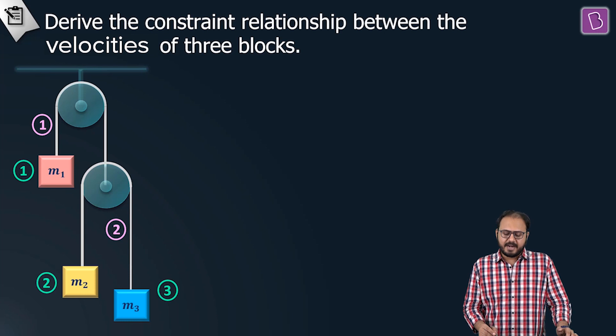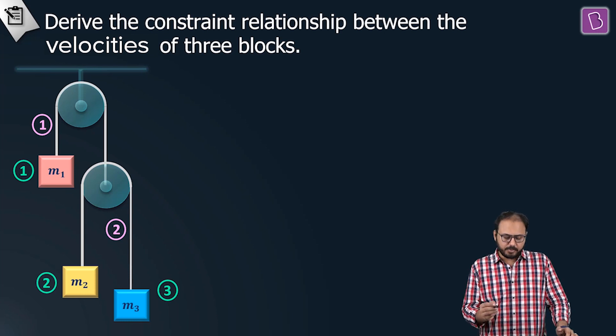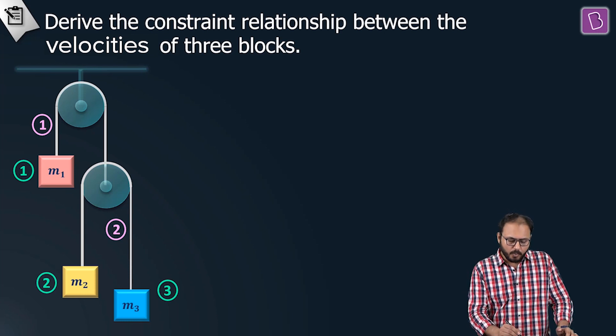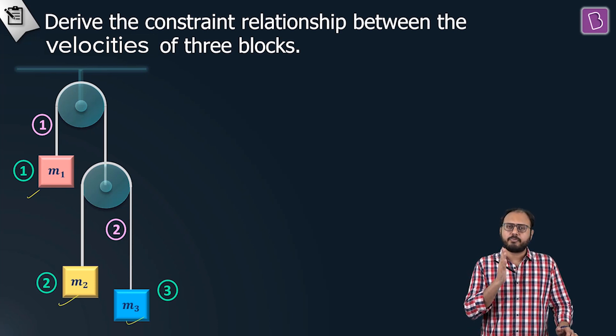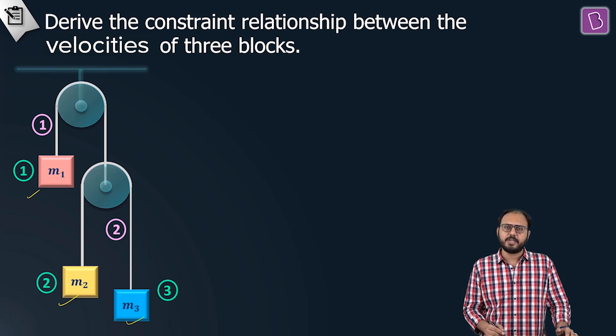Identify the number of strings and number of blocks. How many things are moving? One block, two blocks, three blocks. Don't forget the pulley is also moving, so four movables and two strings.